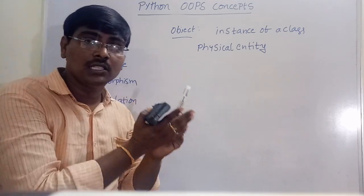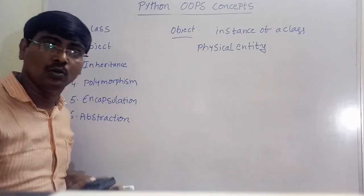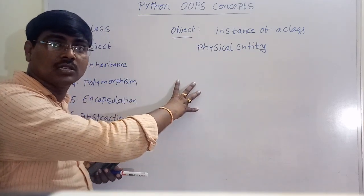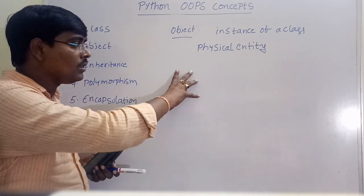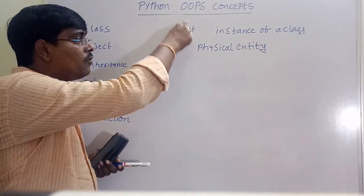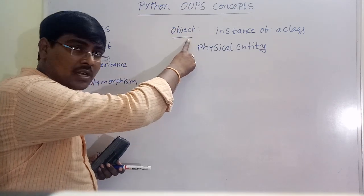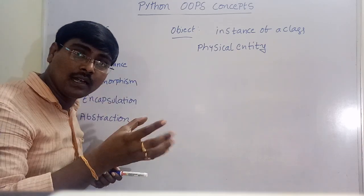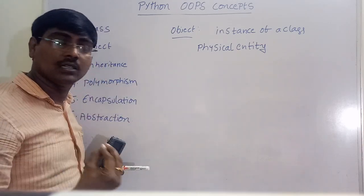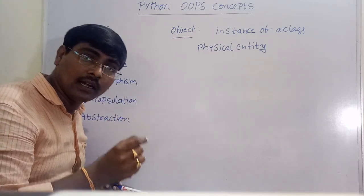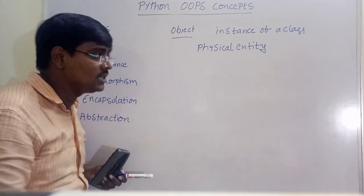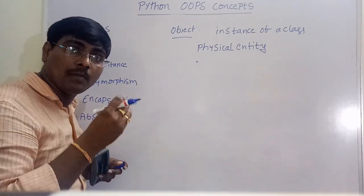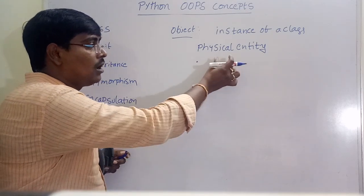The class has no use without an object. If I define a logical structure without accessing it, there is no use. Whenever an object is created, memory is allocated for the class. The object also contains the attributes and methods, and accesses the class using the dot operator — object name dot class member.